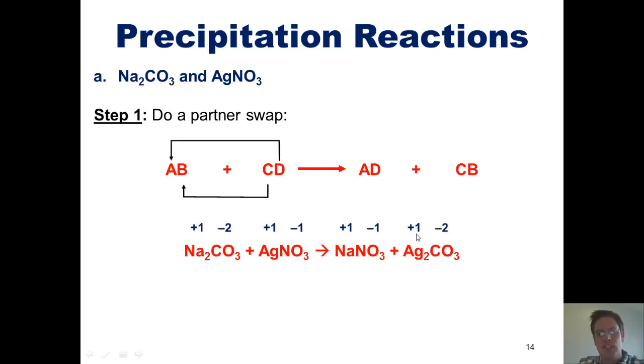Now, how many plus 1 charge silver ions do we have to have present to balance out a negative 2 charge carbonate ion? You guessed it. 2. Hence, we have to add the subscript 2 next to the silver so that this will balance out. Make sense? Good. We've now finished with step 1.